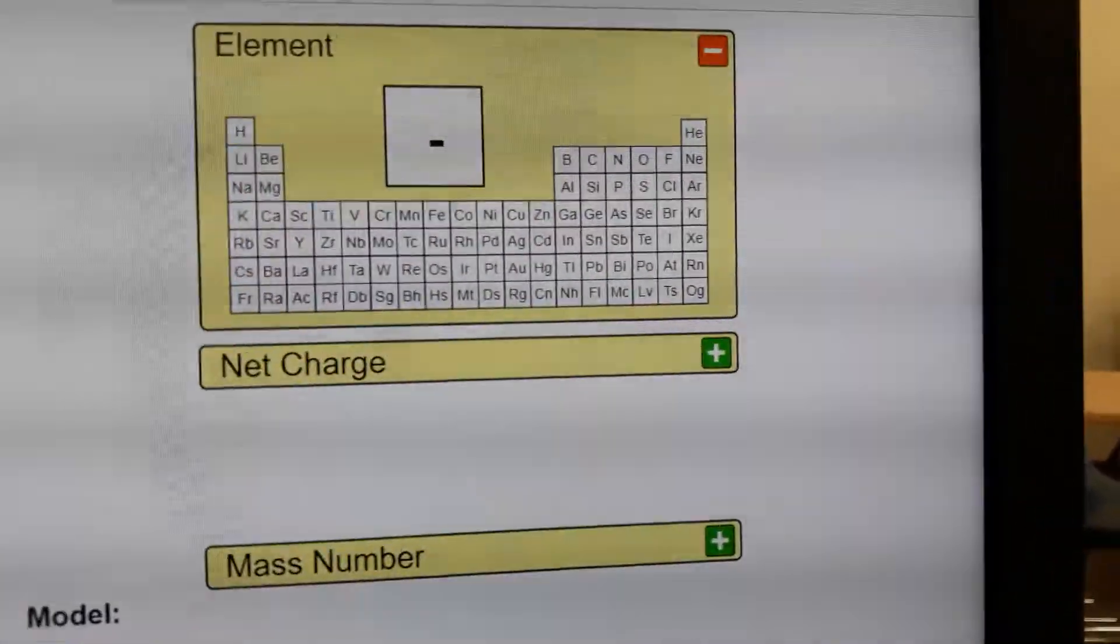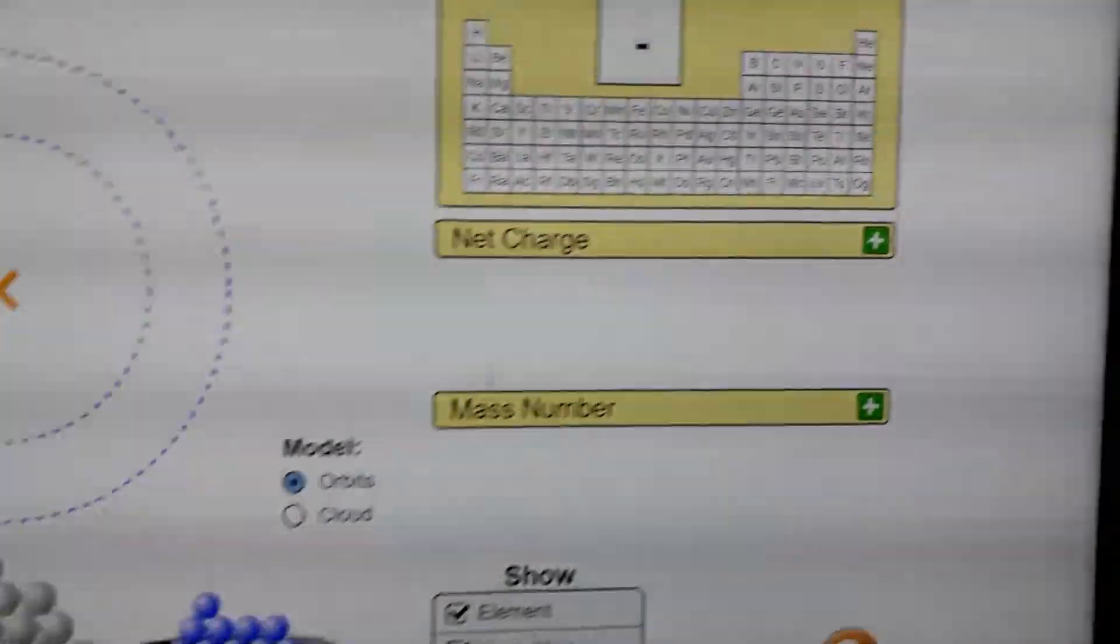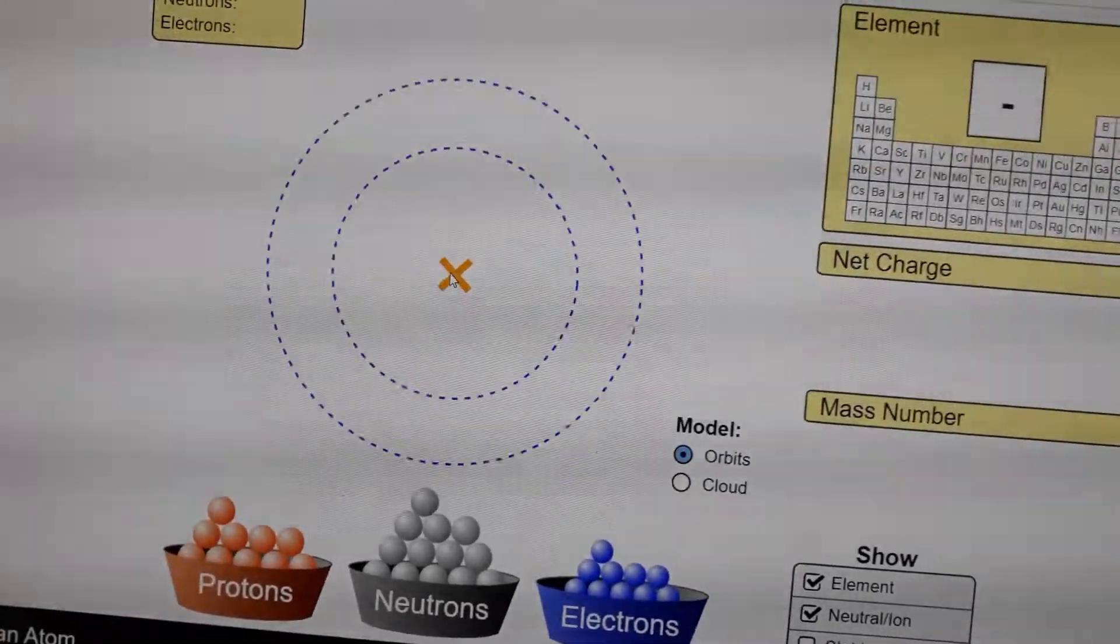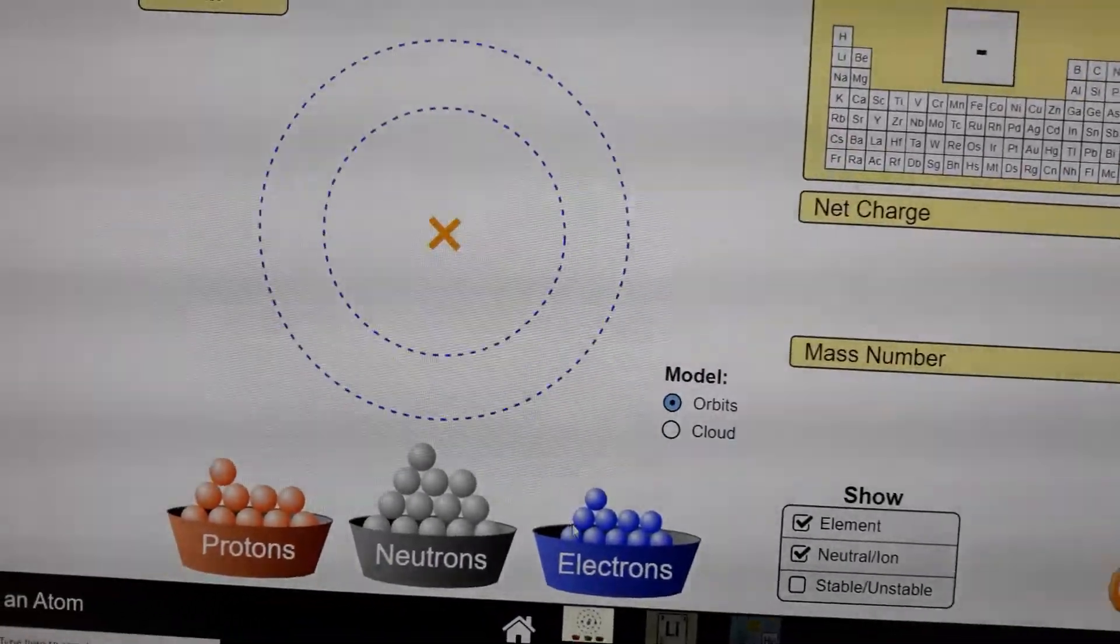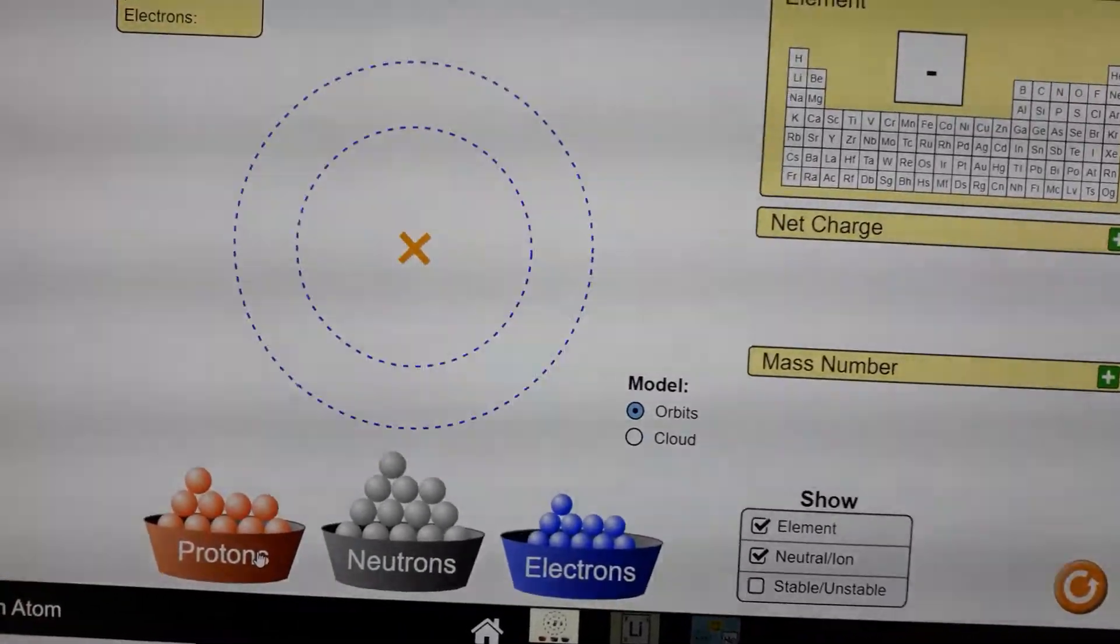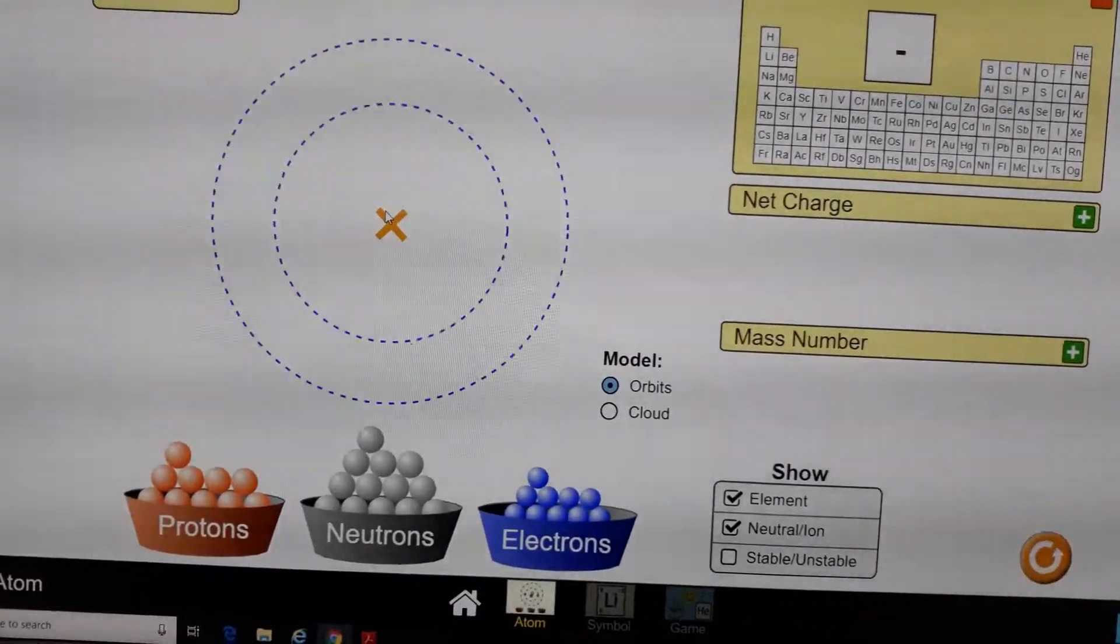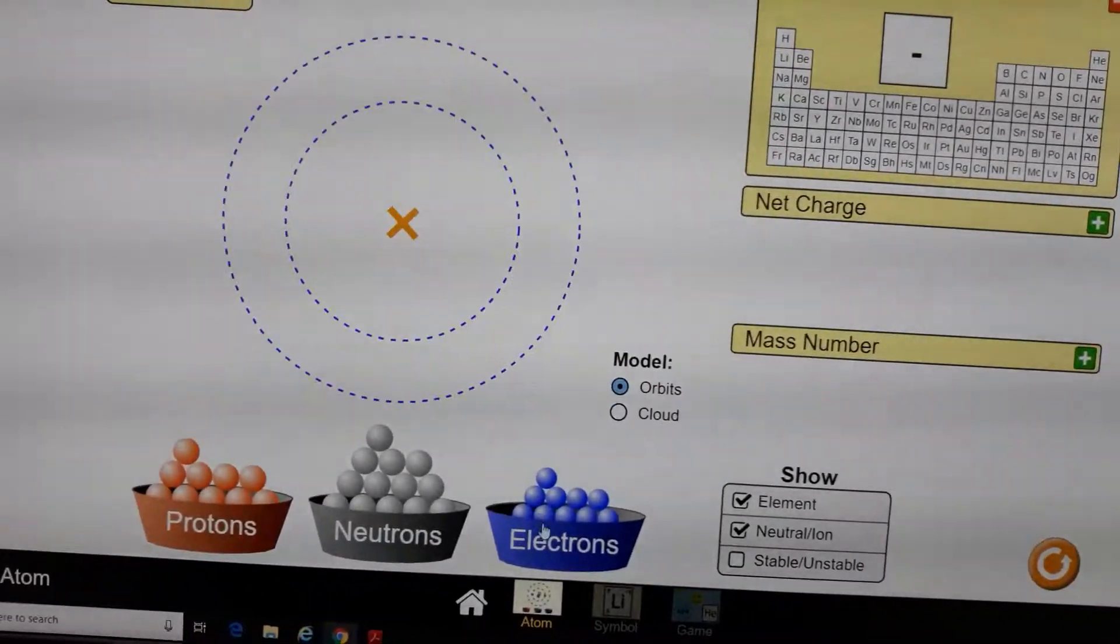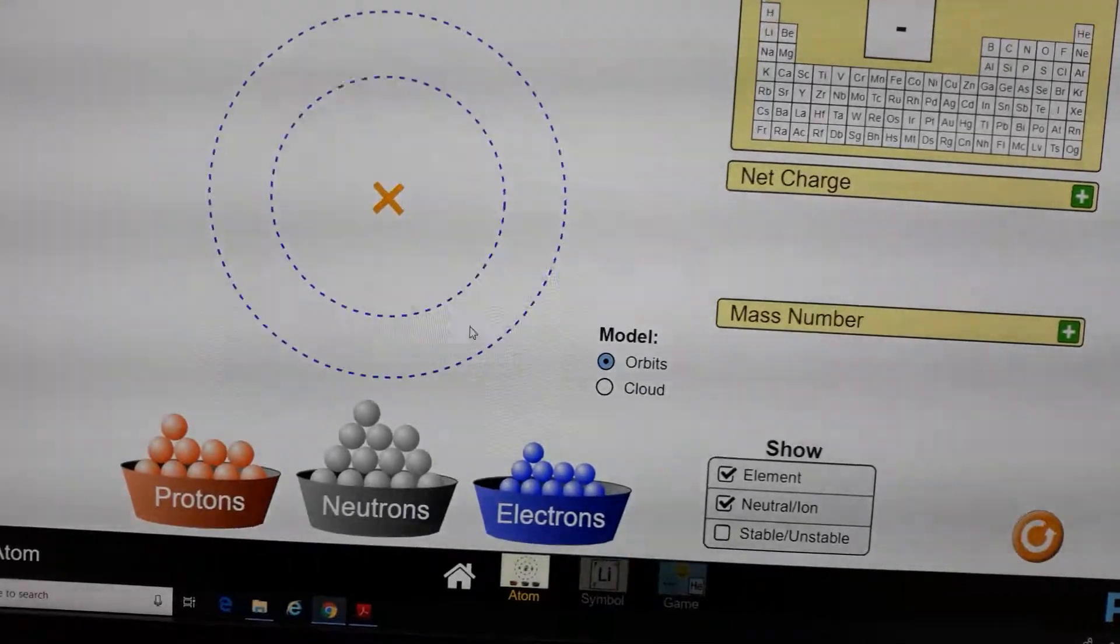Here we have the periodic table with the different elements. Here we have the model of the atom. We have the electrons, the neutrons, the protons. The protons and neutrons are going to go to the nucleus, and the electrons are going to be used around the nucleus, moving in the different orbitals.